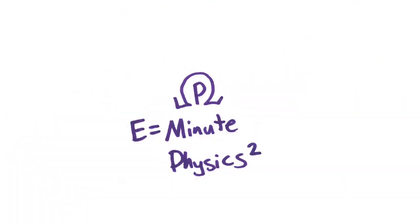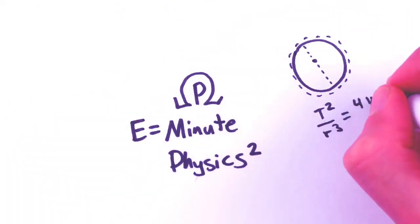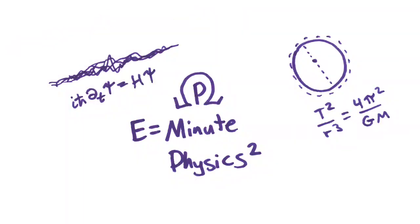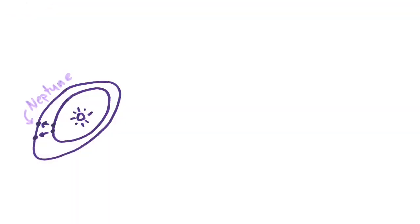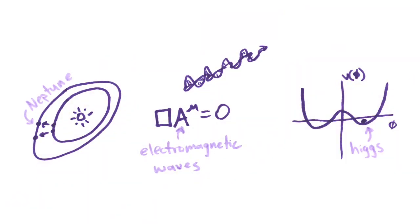Mathematics is a powerful tool in physics, describing everything from the shapes of planetary orbits to the properties of atoms. Math was used to predict the existence of the planet Neptune, radio waves, and the Higgs boson.